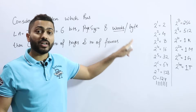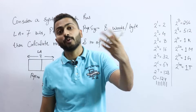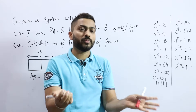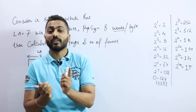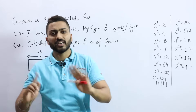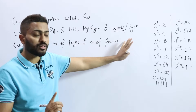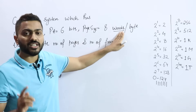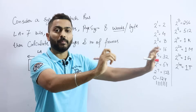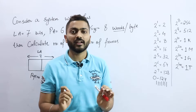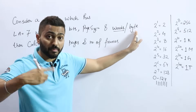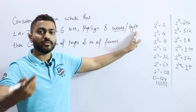One word can have two bytes, or four bytes in a 32-bit system. So the word size depends on the system. But for simple numericals like this, if nothing is mentioned, one word equals one byte. If something specific is mentioned, then you solve accordingly.